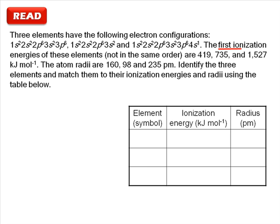The first ionization energy refers to the energy required to remove one electron from a gaseous atom, and the atom radius indicates the size of an atom.